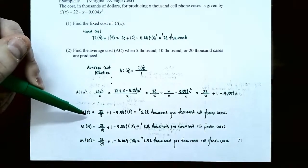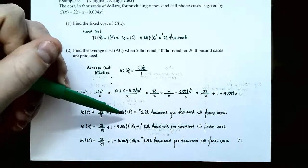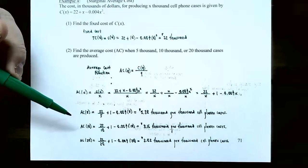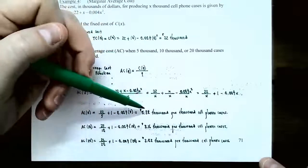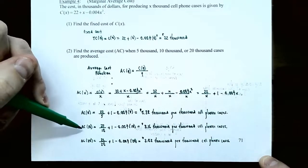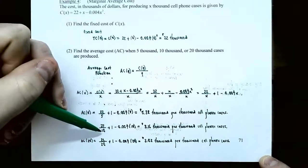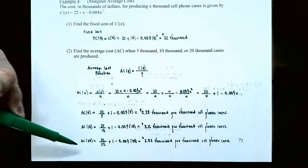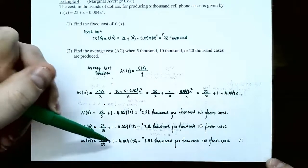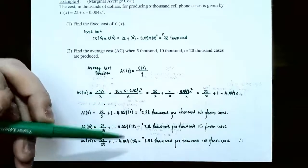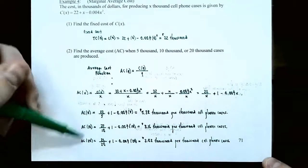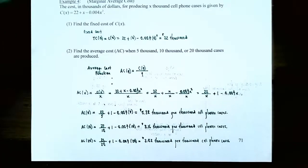Evaluating: for 5,000 cases (X = 5), AC(5) = 22/5 + 1 − 0.004(5) = 5.38, meaning $5,380 per thousand cases. For 10,000 cases (X = 10), AC(10) = 22/10 + 1 − 0.004(10) = 3.16, meaning $3,160 per thousand cases. For 20,000 cases (X = 20), AC(20) = 22/20 + 1 − 0.004(20) = 2.02, meaning $2,020 per thousand cases. As production increases, the average cost per unit decreases.